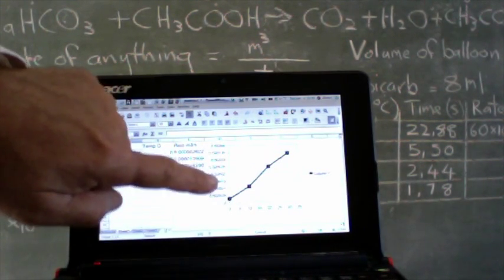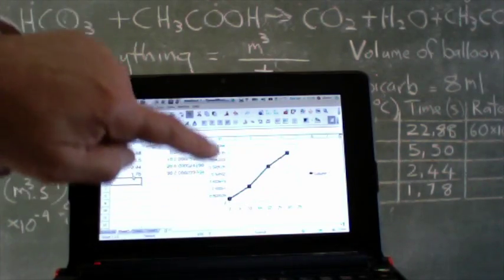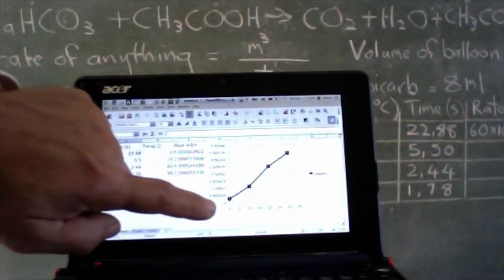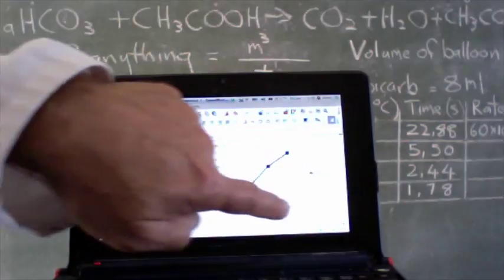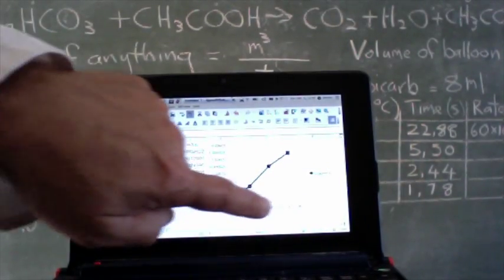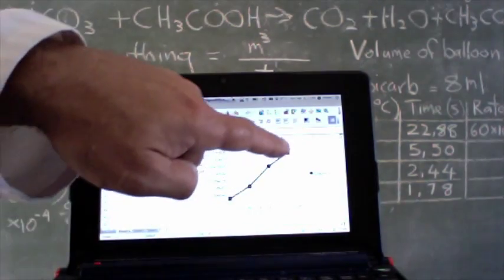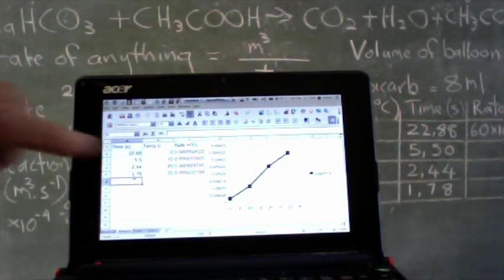Look at that graph. There is our rate of the reaction that's on our vertical or y-axis. There is our time. That is our independent variable. Sorry, temperature. There is temperature, our independent variable along the x-axis. And look at that graph. Almost a beautiful straight line graph.